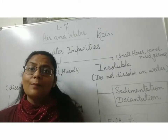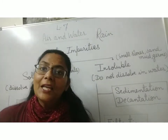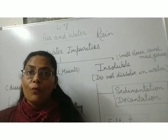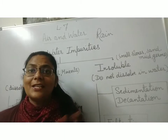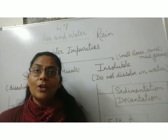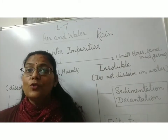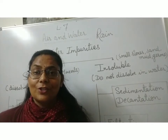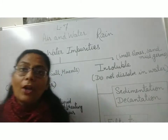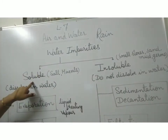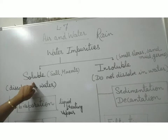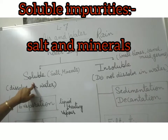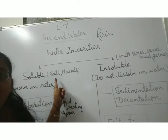That's why rain water, when it comes down, becomes impure. The impurities present in water are actually of two types. Some of the impurities are dissolved in water, and some do not dissolve in water. The impurities which dissolve in water come into the category of soluble impurities — just like salt and minerals.